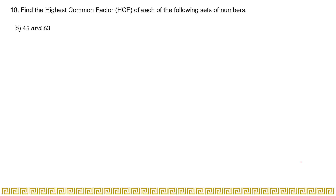Bismillahirrahmanirrahim. Assalamu alaikum, dear viewers. Welcome to video number nine in the series on New Syllabus Mathematics Workbook One, seventh edition. In the last videos we completed part one through part nine. Today we will solve question 10, which asks us to find the highest common factor (HCF) of sets of numbers. There are three methods: listing factors, prime factorization, and the division method. I will focus on prime factorization and the division method.